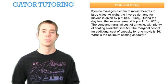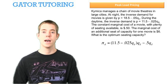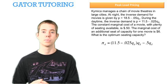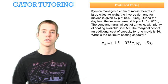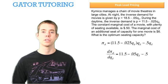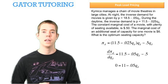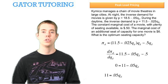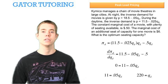Now we do the same thing with respect to daytime. The profit function during the day only has the marginal cost subtracted, and not the additional unit of capacity cost subtracted. We take the derivative with respect to QD, set it equal to 0, and solving with a little algebra, QD equals 220 seats.